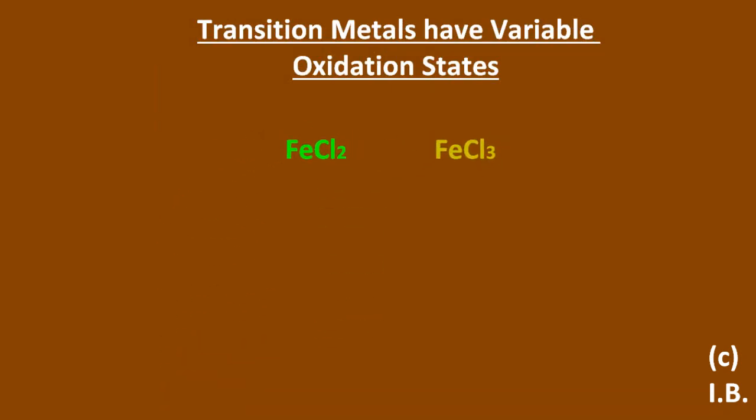Let's look at some examples. So iron can have an oxidation state of plus 2 or plus 3. Copper can have an oxidation state of plus 1 or plus 2.